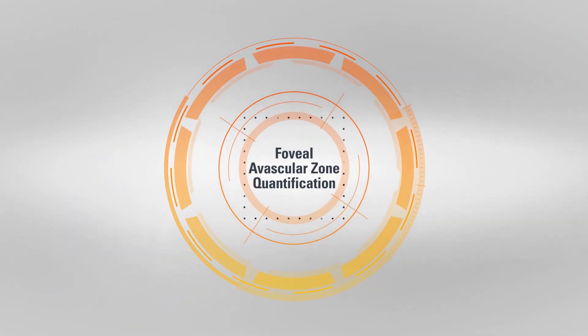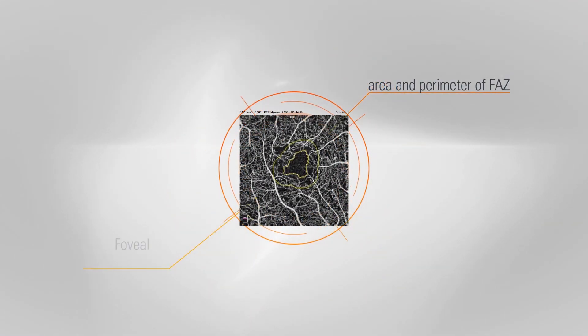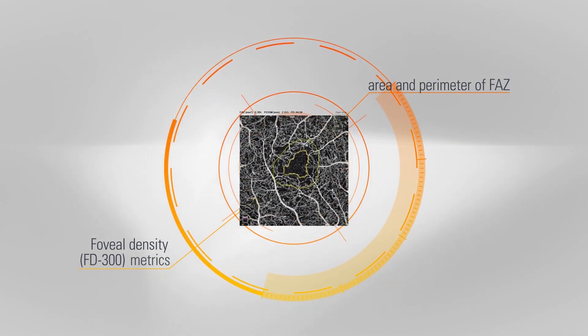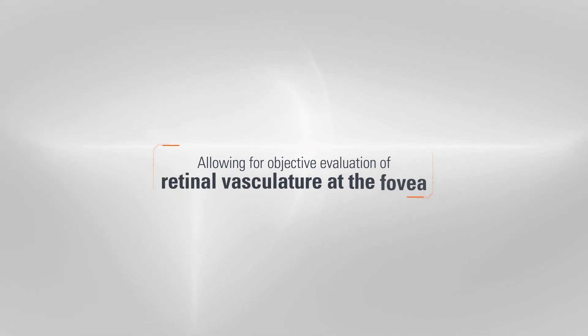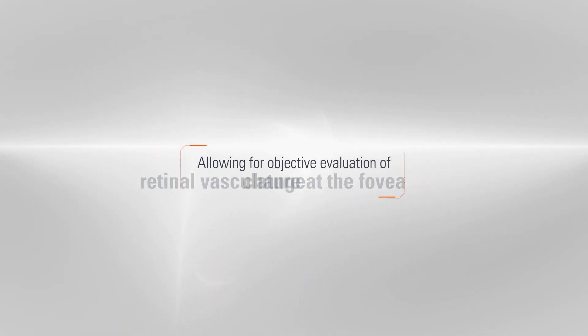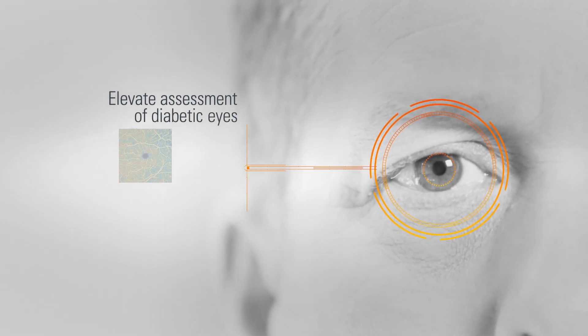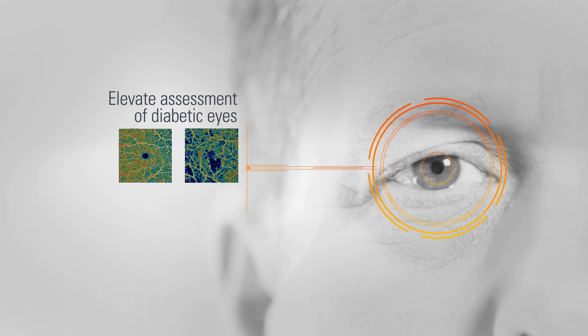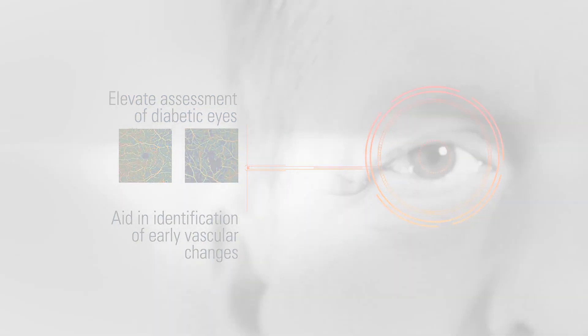FAZ quantification includes the area and perimeter of the FAZ and foveal vessel density metrics, allowing for objective evaluation of both retinal vasculature at the fovea and change over time. These measurements can elevate assessment of diabetic eyes and aid in identification of early vascular changes.